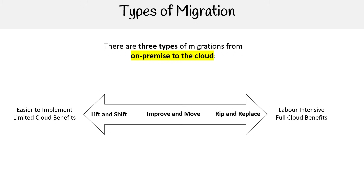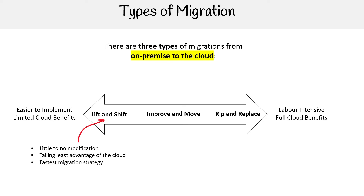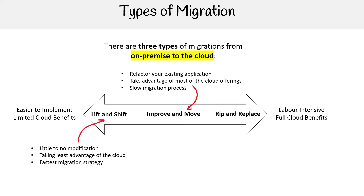Quick summaries of these three types of migration before we dive a little bit deeper into each of them. For lift and shift, there's little to no modification — we're taking the least advantage of the cloud, but it's going to be the fastest migration strategy. For improve and move, we refactor the existing app to take advantage of most of the cloud offerings, but it's a slower migration process.